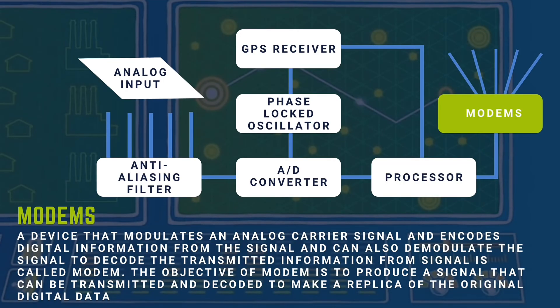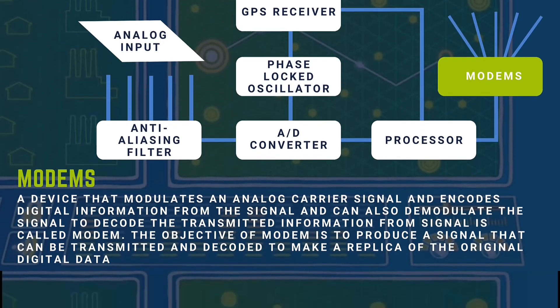Modem: A device that modulates an analog carrier signal and encodes digital information, and can also demodulate the signal to decode the transmitted information, is called a modem. The objective of a modem is to produce a signal that can be transmitted and decoded to make a replica of the original digital data.